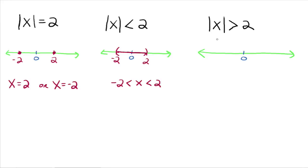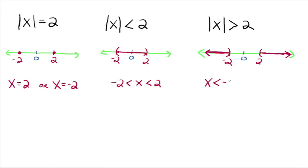So now let's do the absolute value of x is greater than 2. This is asking us to find all numbers whose distance from zero is larger than 2. There's 2 and there's negative 2. What numbers have a distance from zero that are larger than 2? Take any number out in this direction — any number larger than 2 — its distance from zero is certainly greater than 2. Also, take any number towards negative infinity. Take any number in either one of those two shaded regions, and they will have a distance that's greater than 2. Negative 2 and 2 are parentheses. So algebraically, it would look like: x is less than negative 2, or x is greater than 2.